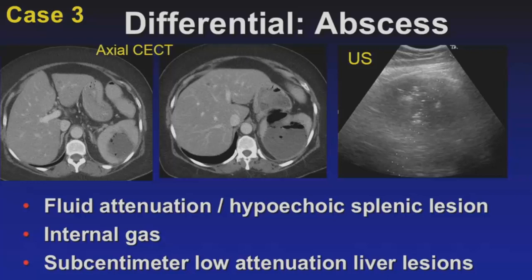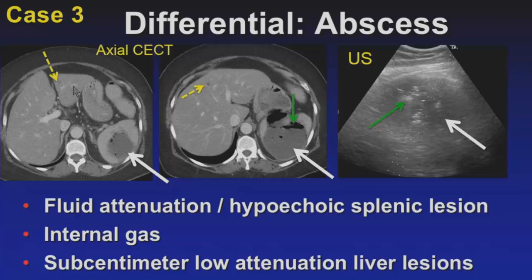First in the differential is abscess. Patients can develop splenic abscess by hematogenous spread, penetrating injury, or from an infarction. Splenic abscess is predominantly fluid attenuation, hypoechoic with increased through-transmission on ultrasound. This case has gas within the abscess — recognized on ultrasound as linear echoes. There were also a few sub-centimeter liver lesions possibly representing micro-abscesses. The management shown is aspiration and drainage of the splenic lesion.